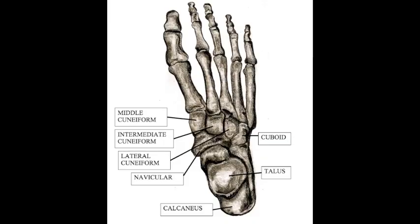Here, in greater detail, are the bones that make up the tarsals. There are three cuneiforms which connect to the metatarsals: the middle, the intermediate, and the lateral cuneiforms. Then comes the navicular and the cuboid bones. Lastly, as previously seen, there is the talus and the calcaneus.